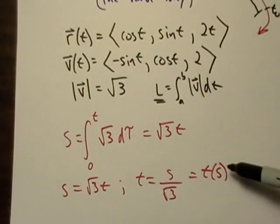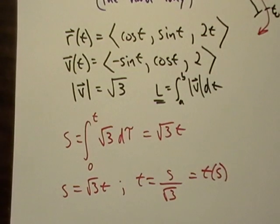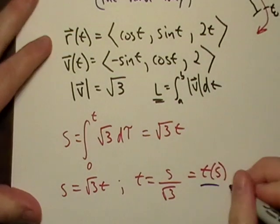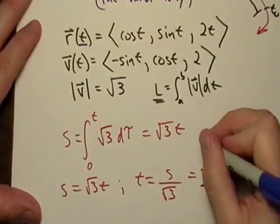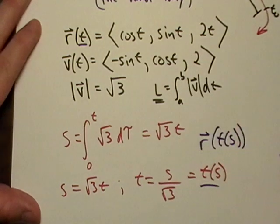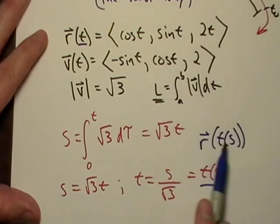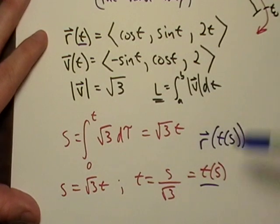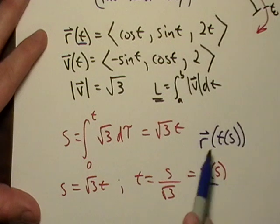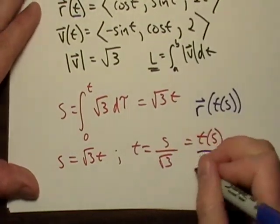We're interested again in just a certain parameter S, so what we're going to do is we're going to take this T of S and we're going to plug it in. We're going to sub it in the T, so it's going to end up looking like this, R of T of S. And if we wanted to take the derivative of this whole thing, we would use the chain rule, wouldn't we? Because now we have a composite function.